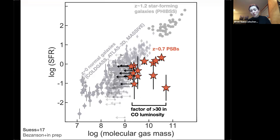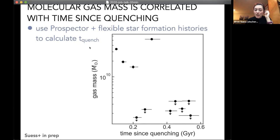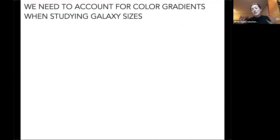We also got a bunch of non-detections whose stack is near the edge of what you'd expect from the Kennicutt-Schmidt relation. This is a factor of about 30 in CO luminosity across what is optically a fairly uniform sample. Something is happening to the molecular gas in these galaxies on fairly short timescales. Using prospector to fit star formation histories and get constraints on how long these galaxies have been quenched, the gas appears on extremely short timescales after quenching and then disappears at around 0.2–0.3 Gyr.